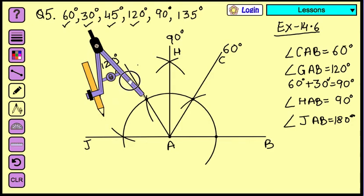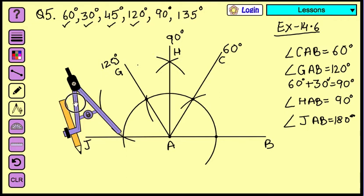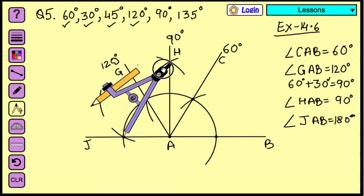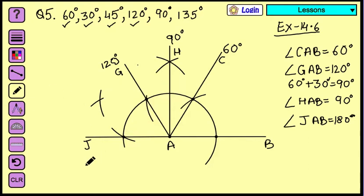Now place your compass on the other end because we are bisecting this angle. When you draw a line from A, from this intersecting arc point, you are going to get 150. So from here, if I draw a line passing this line, I will get 150 degree.